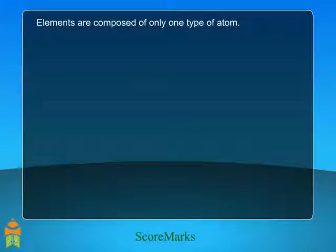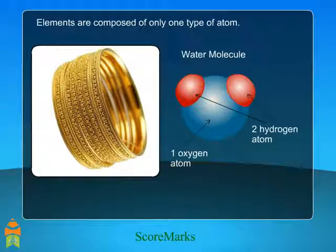Elements are composed of only one type of atom. A piece of gold contains only gold atoms.